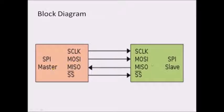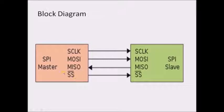MOSI of the master is connected to MOSI of the slave, so any data transmitted by the master is received by the slave through the same pin. MISO of the master is connected to MISO of the slave, so data transmitted by the slave is received by the master. The slave select is active low, indicated with a bar symbol as SS bar. The master sends logic zero through a GPIO pin to the slave device, and whenever SS bar is activated, the slave gets enabled and can communicate with the master.